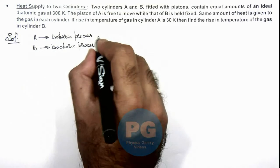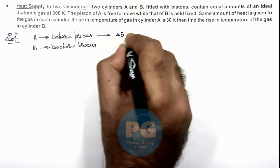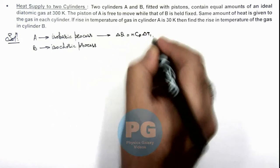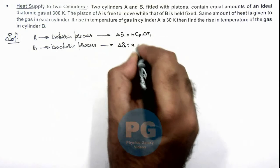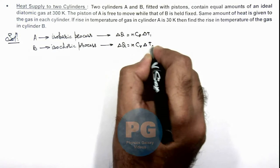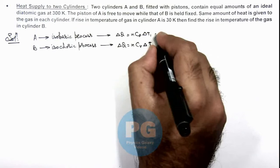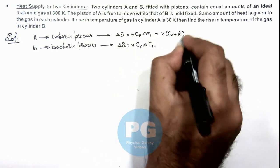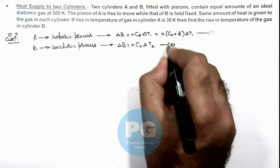So we can directly write for cylinder A the amount of heat supplied as nCpΔT₁, and for cylinder B we can write ΔQ equals nCvΔT₂. Cp we can also write as Cv plus R, so this is n(Cv + R)ΔT₁. This is equation 1 and this is equation 2.